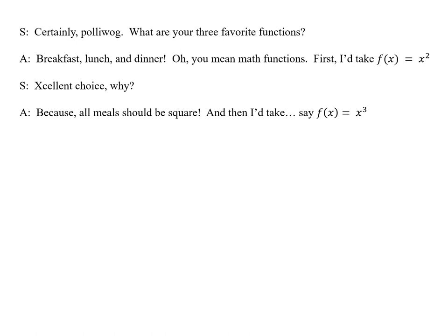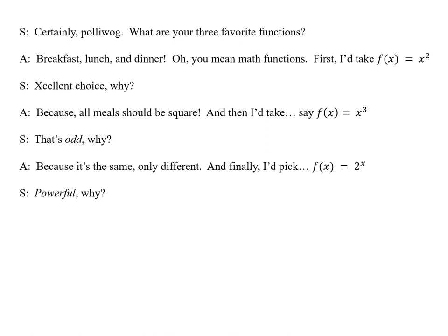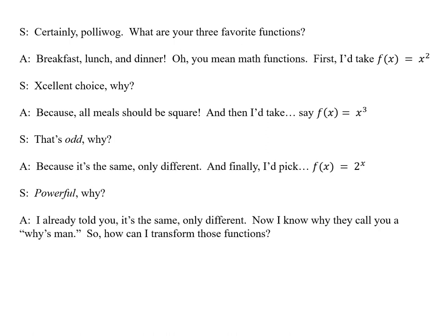Because all meals should be square. And then I take, say, f(x) = x³. That's odd. Why? Because it's the same, only different. And finally, I pick f(x) = 2^x. Powerful. Why? I already told you, it's the same, only different. Now I know why they call you a wise man. So how can I transform those functions?